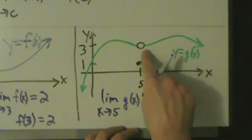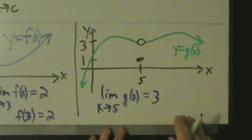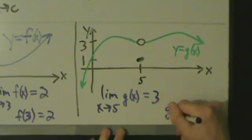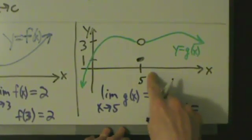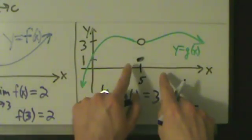And the same thing from the right, it looks like y is going to 3. But what is the actual value of the function when x equals 5? In other words, what's g of 5? Well, when x is 5, y is 1.